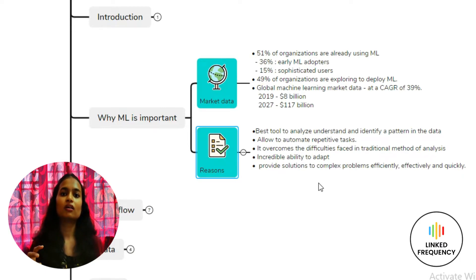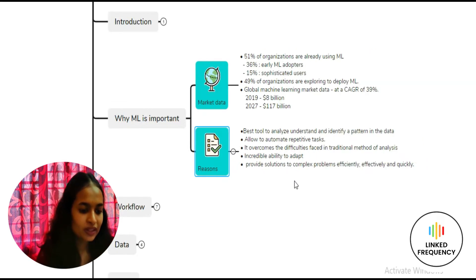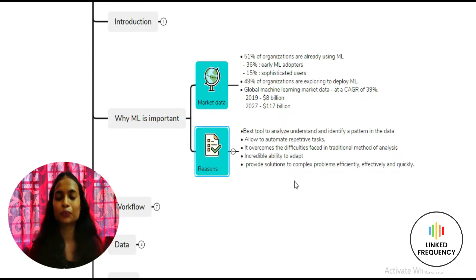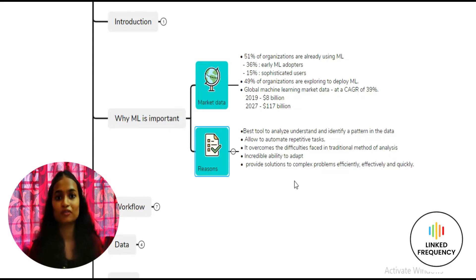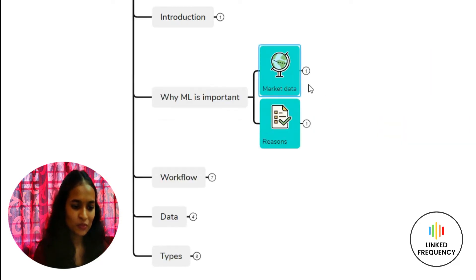So that covers the traditional versus machine learning approach. A major advantage is that you eliminate the process of writing code to get a required result. Those are the key factors favoring machine learning as a very important concept. If you know any other important factors, do comment below in the comment section.